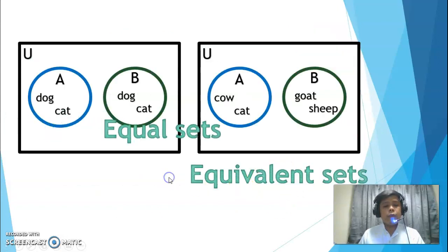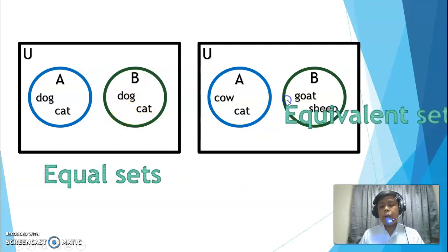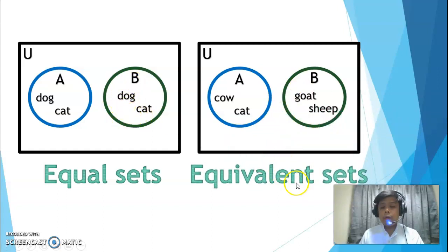So, this is equal sets. Why are they called equal? Set A and set B, if you notice, have exactly the same elements. Set A, its elements are dog and cat, set B is the same. The second one, this is equivalent set. Why? The two sets have the same number of elements. How many elements does set A have? Two. How many elements does set B have? Two also. And they don't have the same elements. So, they are equivalent sets.